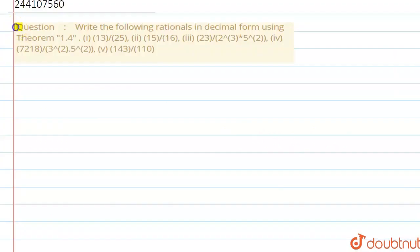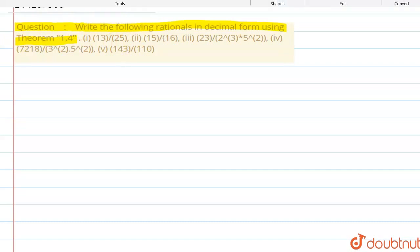Hi guys, the question is: write the following rationals in decimal form using Theorem 1.4. We have some rationals and we have to convert them into decimal form by using Theorem 1.4.